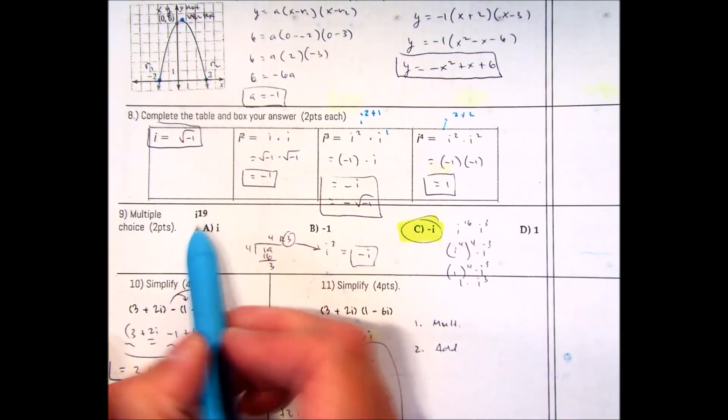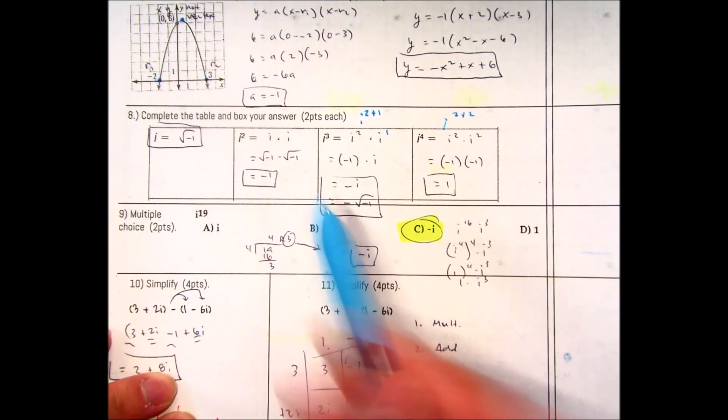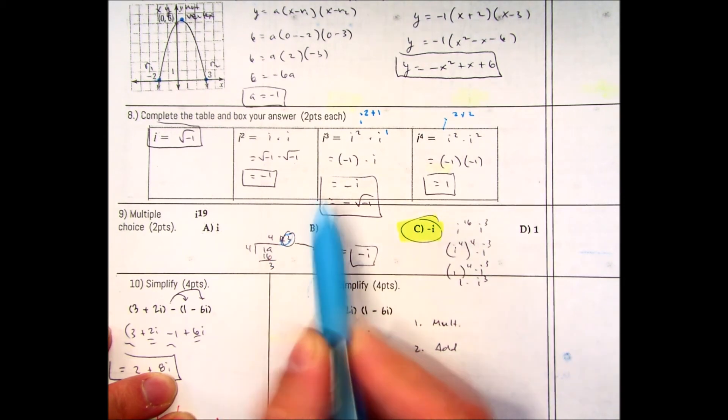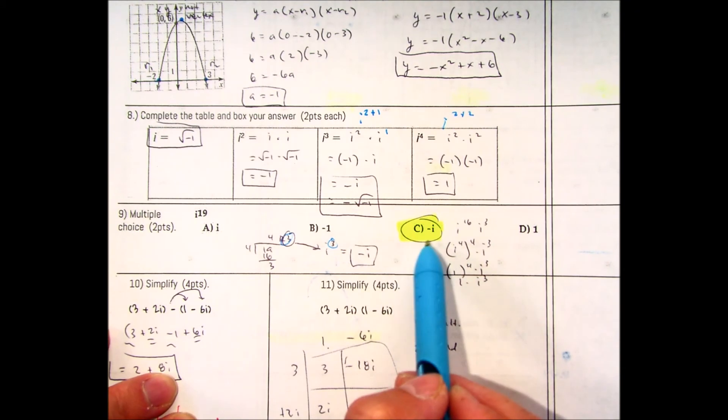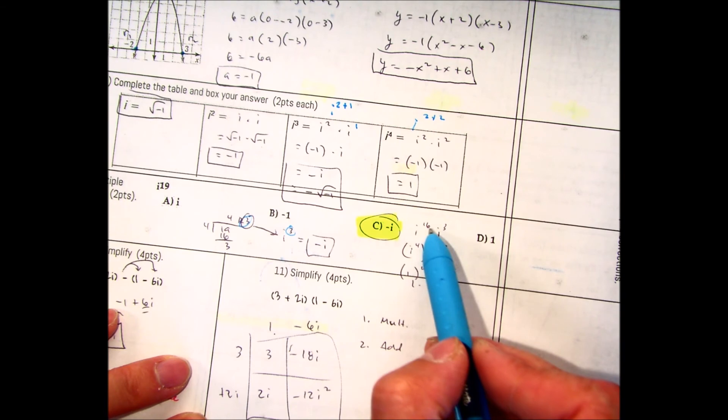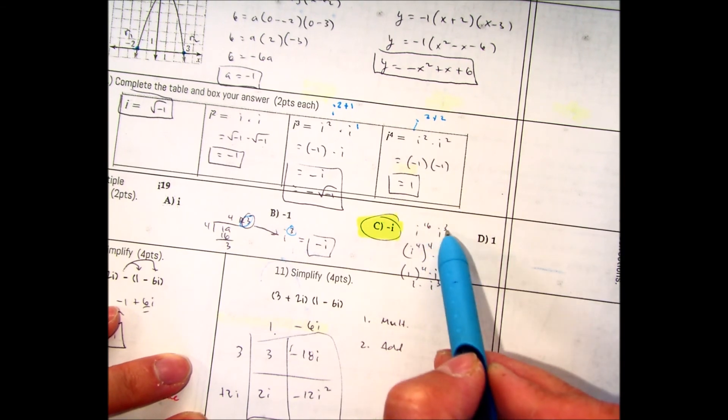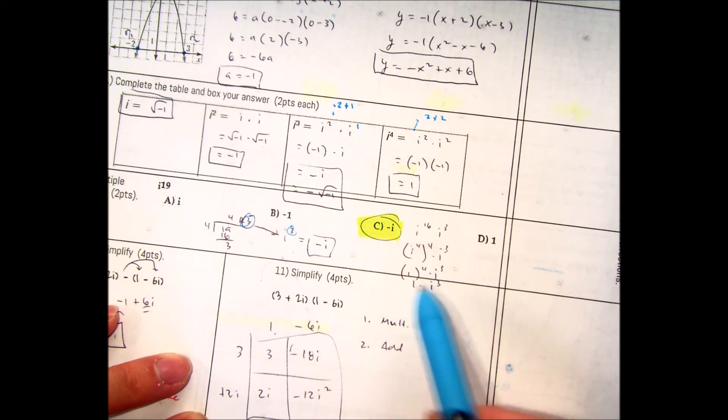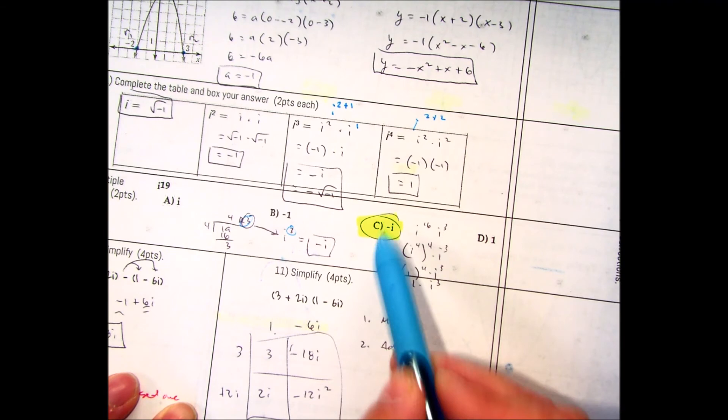Question number 9. It asks you to simplify i to the 19th power. You can do two options here. i divided by 4. 4 goes into 19 4 times with the remainder of 3. So you take the remainder and you put that above. You have i to the third power. Well, you can look above if you do this correctly. That would be negative i, which is c. If you do this by exponents, I have i to the 16th power times i to the third power. The reason why I chose anything to a factor of 4 is that I can do i to the fourth power because i to the fourth power is 1. 1 to the fourth power is just 1. And 1 times i to the third is just i to the third, which is negative i.